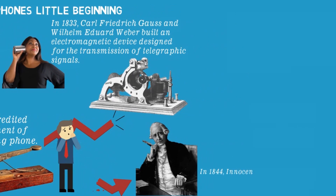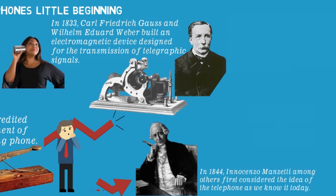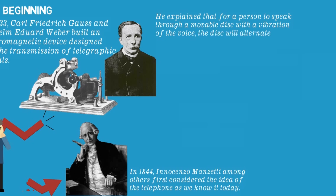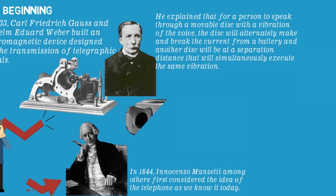In 1844, Innocenzo Manzetti, among others, first considered the idea of the telephone as we know it today. In 1854, French engineer Charles Bourseul proposed the first design of a make-and-break telephone. He explained that a person speaking through a movable disc would cause vibrations, alternately making and breaking the current from a battery, while a second disc at a distance would simultaneously execute the same vibrations. Bourseul predicted that speech would one day be transmitted through electricity, but he was ultimately unable to build the telephone.